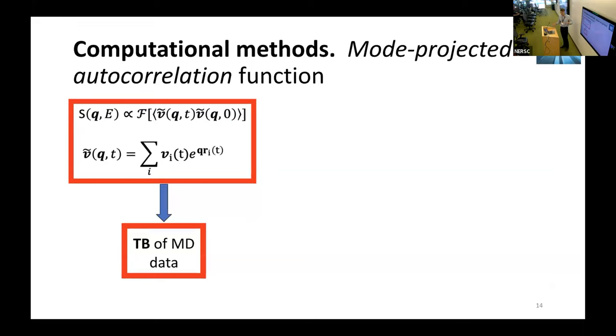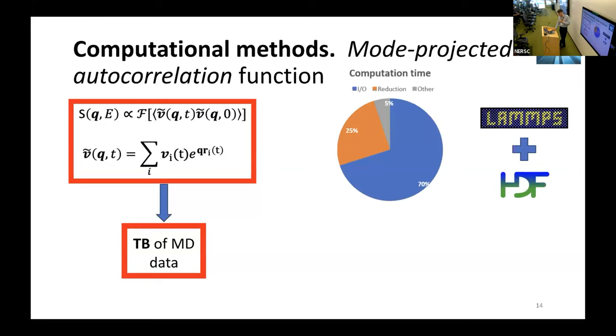After doing this, there is another problem that arises. Such datasets of 10^5 number of atoms and a lot of picoseconds is terabytes of MD data that needs to be post-processed. When we do these Fourier transforms, it appeared that I/O is actually a big problem, constituting almost 70% of the computational time if you do it in raw formats. The reduction is only 25%, and other stuff such as autocorrelation function time Fourier transform is only 5%.